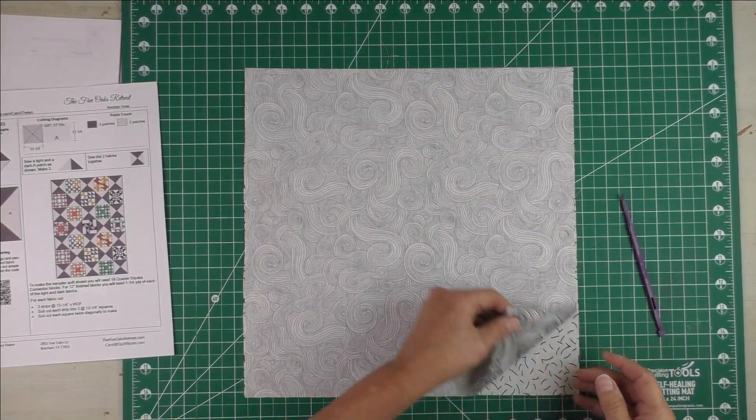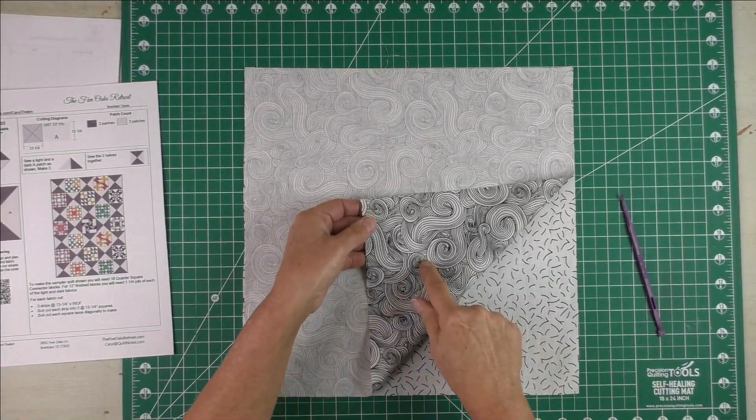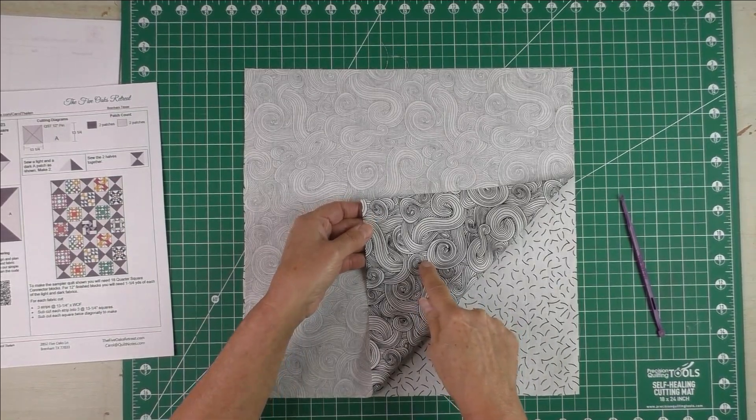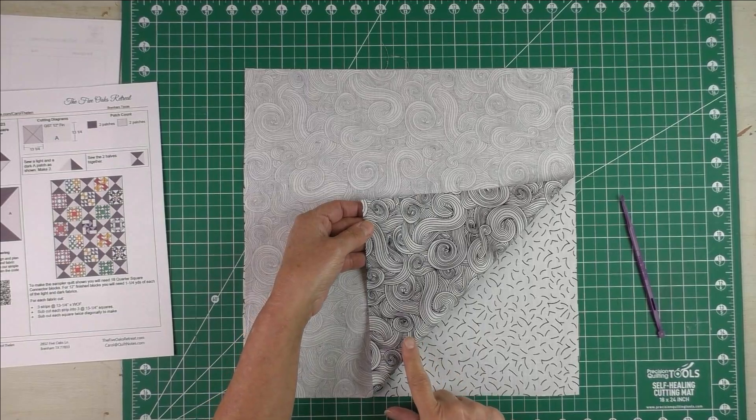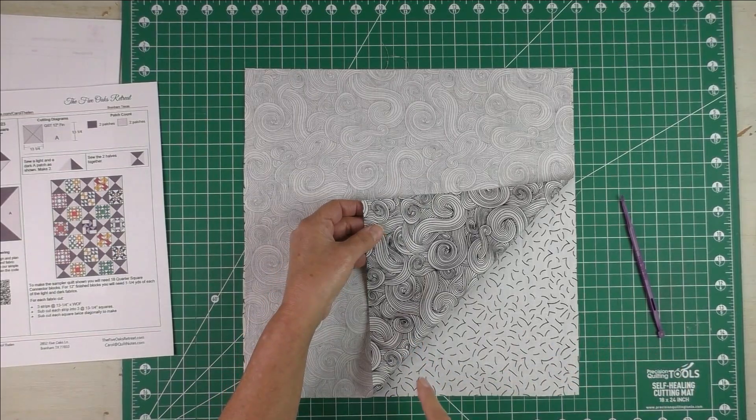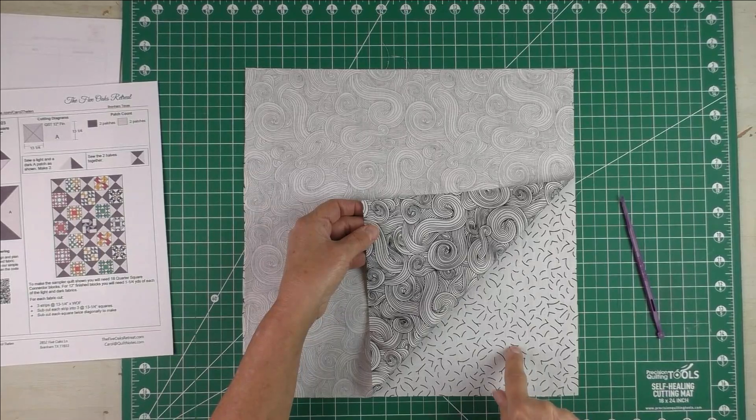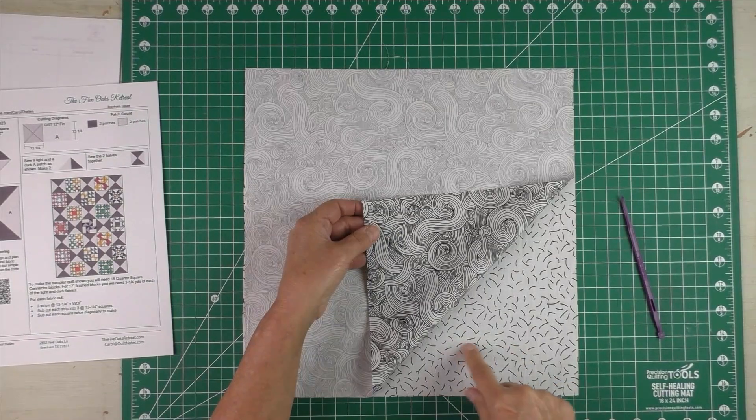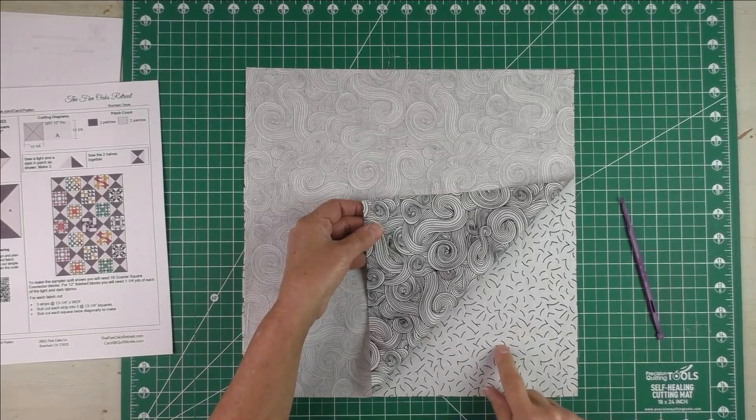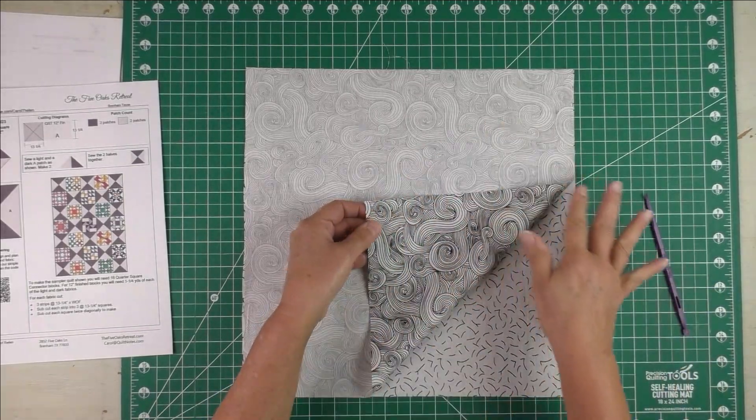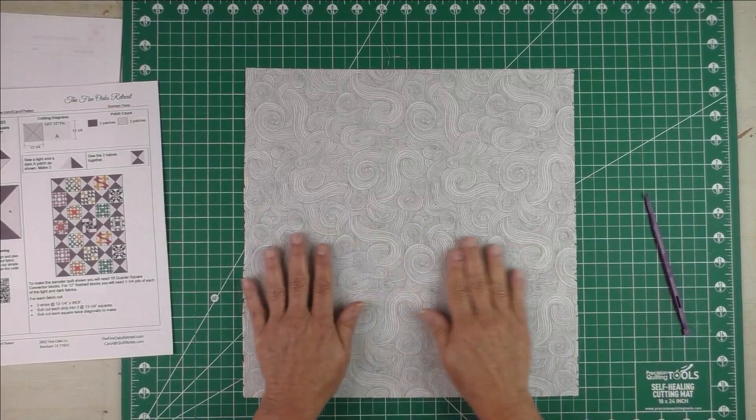Here is the fabric I've chosen. This is from Studio E Fabrics, it's called Just Color the Collection, and I think this is called Slate. This is from Island Batik, it's from the Dashes collection, and this color is Salt and Pepper. I have two of them put together right sides together.